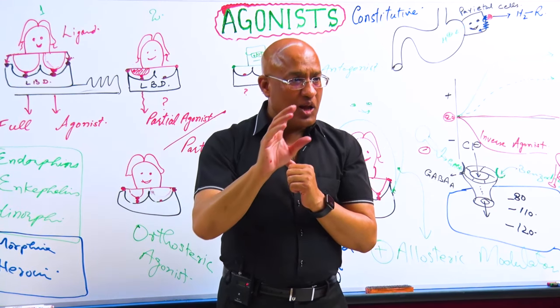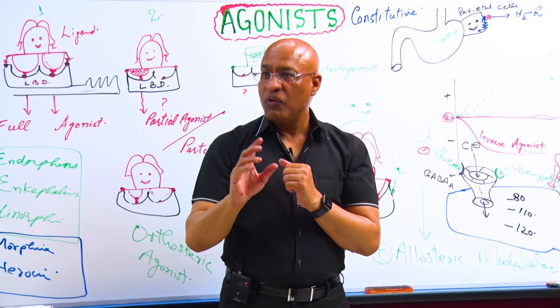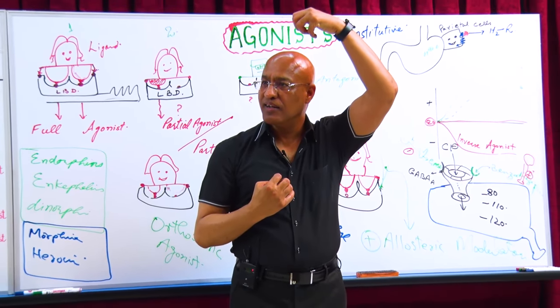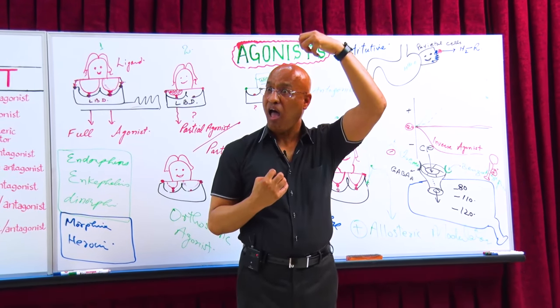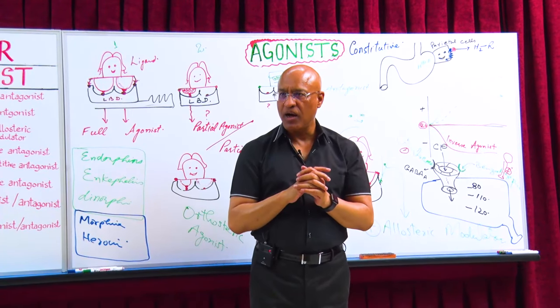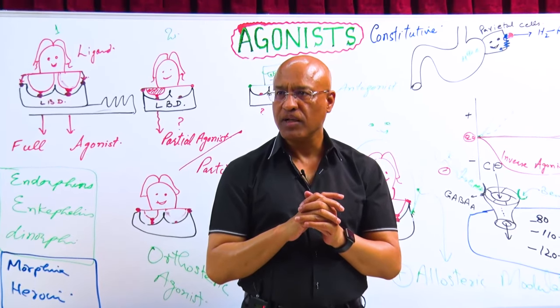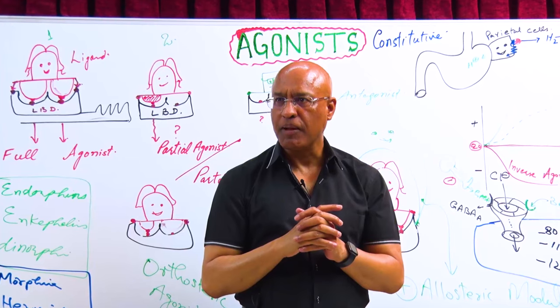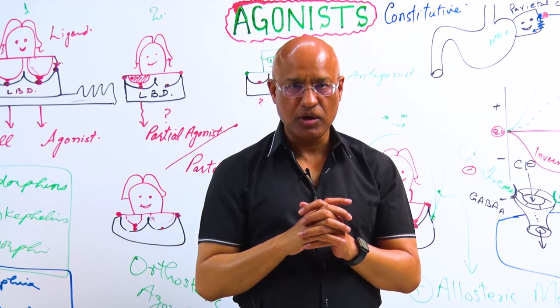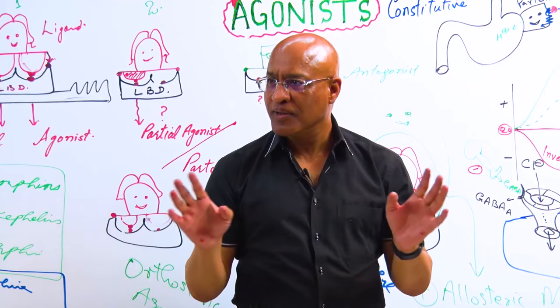But what barbiturate is doing is keeping the mouth open permanently, right? So with my mouth, I'll show you the action of, first of all, GABA, now benzodiazepines and GABA, and now barbiturate. You get it?